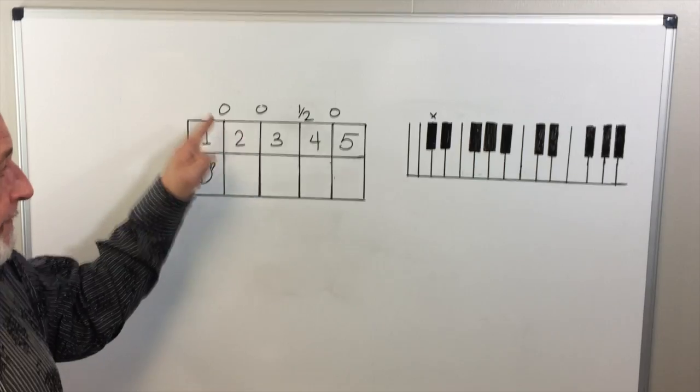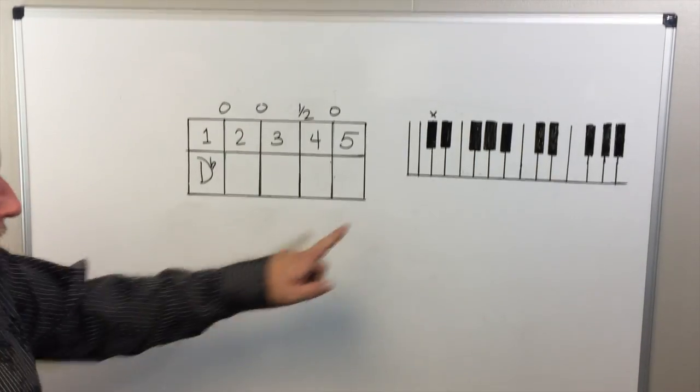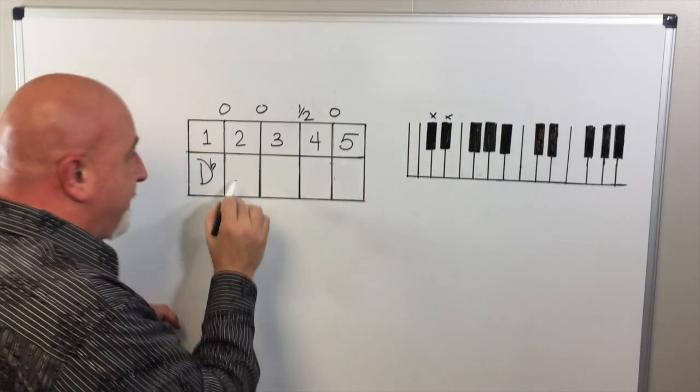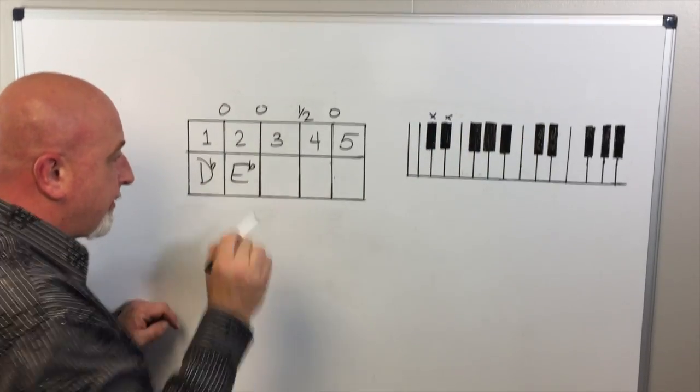Now theory dictates that between the first and second position that we have a whole step. So we're going to skip D on our keyboard and jump over to E-flat. We'll mark that down in our grid.